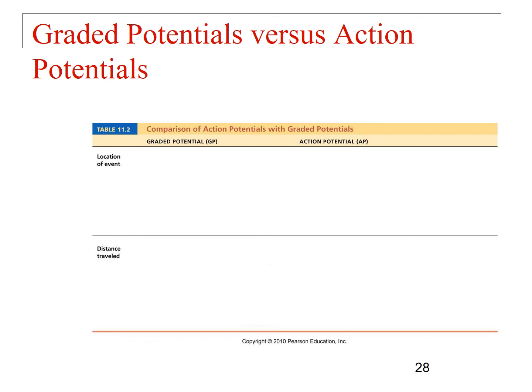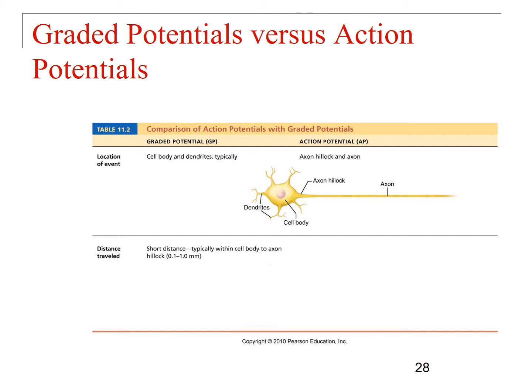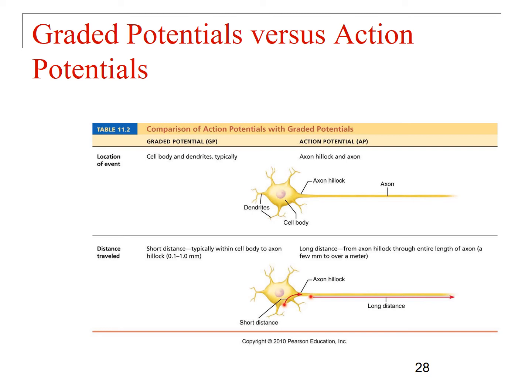Let's look at a summary of graded potentials versus action potentials. Where do graded potentials occur? In cell bodies and dendrites. Where do action potentials occur? In the axon hillock and the axon. How far can they travel? Graded potentials travel only a short distance — usually from the cell body to the axon hillock, between 0.1 and 1 millimeters. With action potentials, they can travel a really long distance — a few millimeters or over a meter.